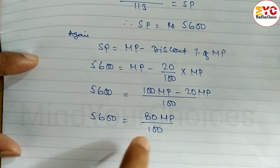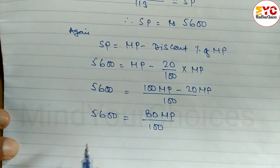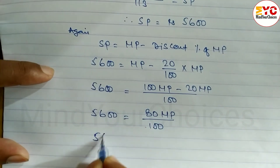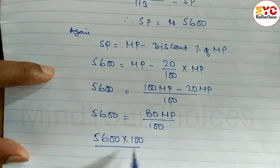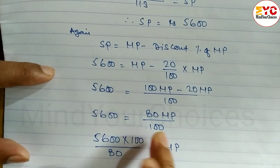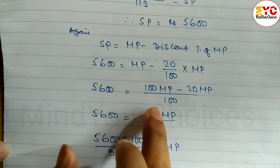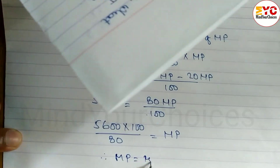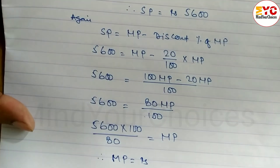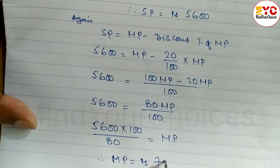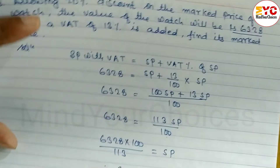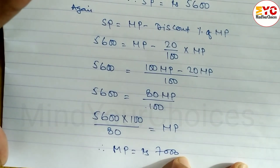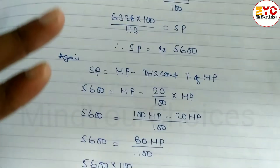Cross multiply: 5,600 into 100 divided by 80 is equal to MP. Therefore MP is equal to rupees - just calculate this - we get 7,000. So we have found the mark price. Mark price is equal to rupees 7,000. Hope you understand this question. Now look at the next one.